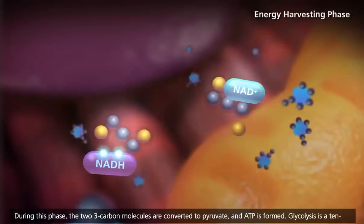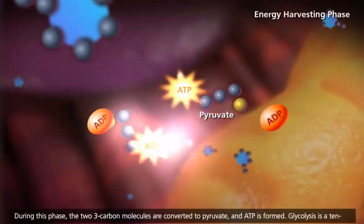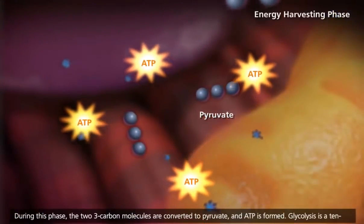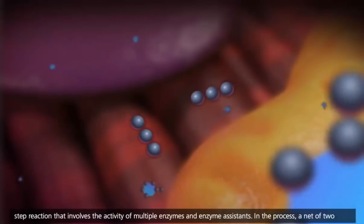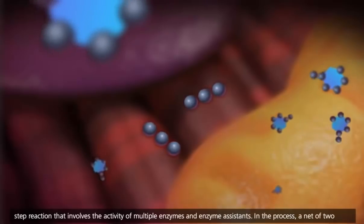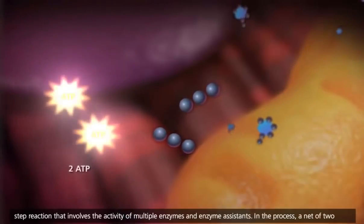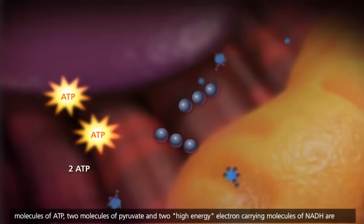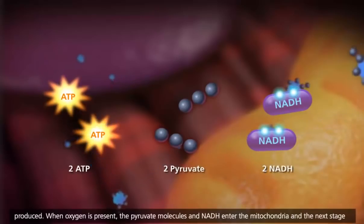During the energy harvesting phase, the two three-carbon molecules are converted to pyruvate, and ATP is formed. Glycolysis is a ten-step reaction that involves the activity of multiple enzymes and enzyme assistance. In the process, a net of two molecules of ATP, two molecules of pyruvate, and two high-energy electron-carrying molecules of NADH are produced.